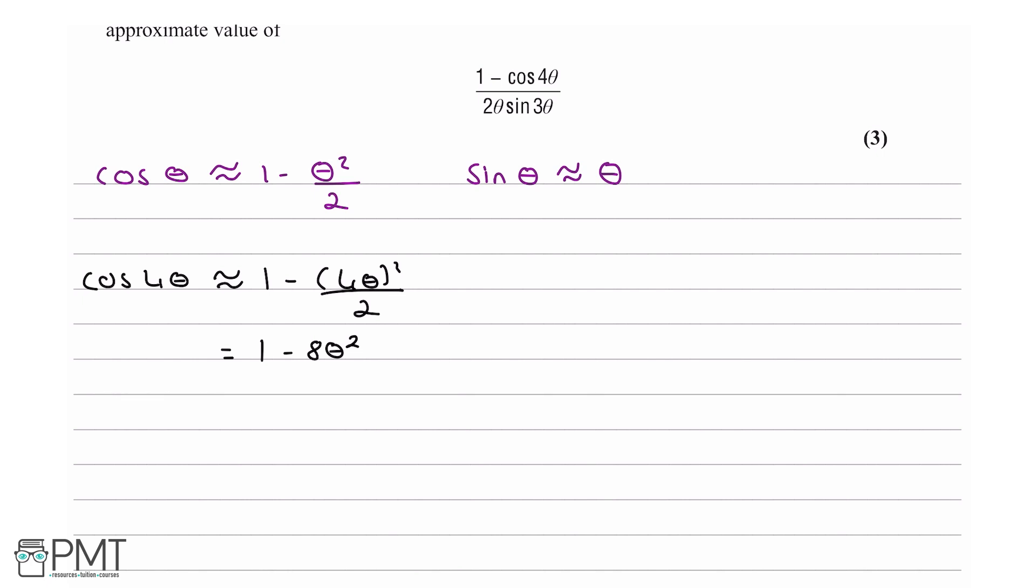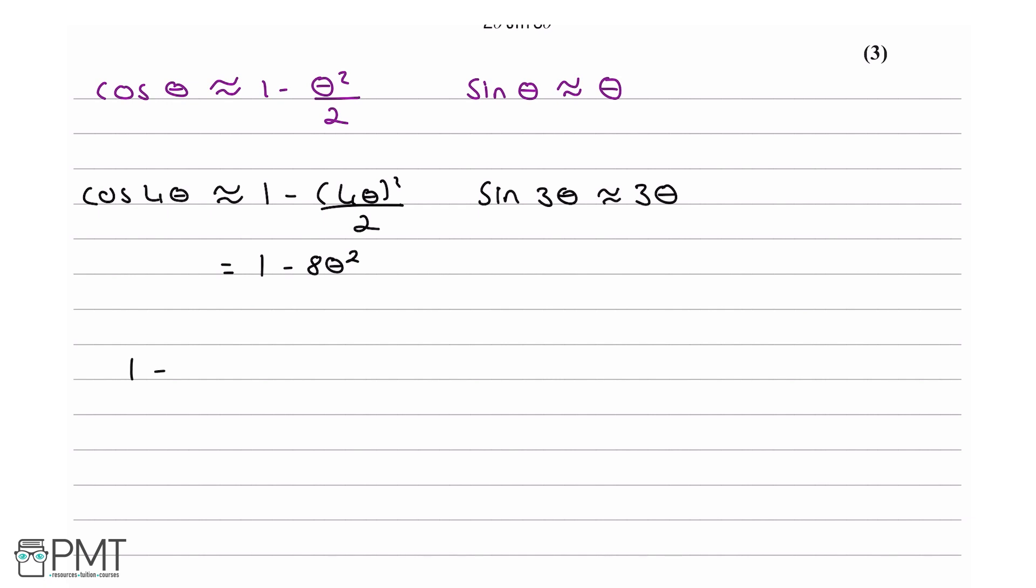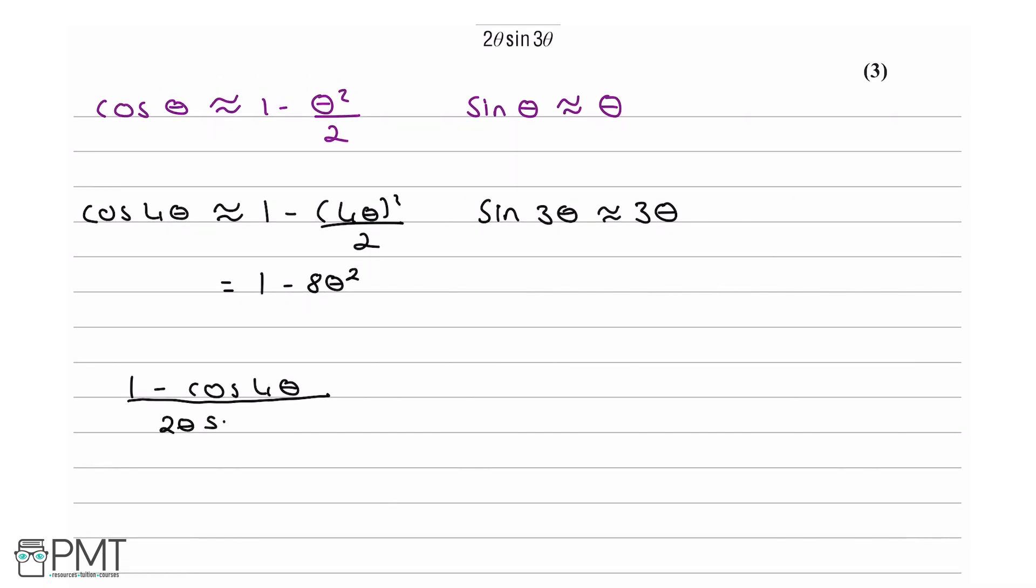Now sin 3θ is approximately 3θ. If we put this all back into our expression (1 - cos 4θ)/(2θ sin 3θ), what is cos 4θ? It's 1 - 8θ². So we get (1 - (1 - 8θ²))/(2θ · 3θ). We substitute sin 3θ for 3θ and cos 4θ for 1 - 8θ².